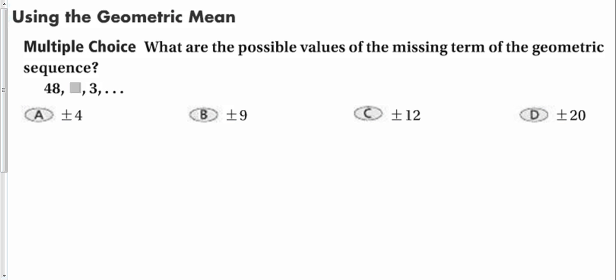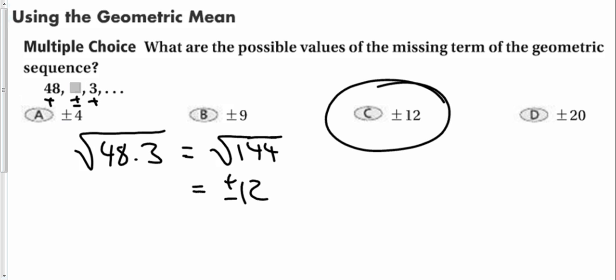Alright, so here's a geometric sequence. 48 blank 3. Well, I know that if I take the square root of 48 times 3, which is square root of 144. The square root of 144 is 12, but my answer could be either plus or minus 12. Because if this is positive, this could be a plus or a minus. And then my geometric sequence still holds. But anyway, the answer is C.